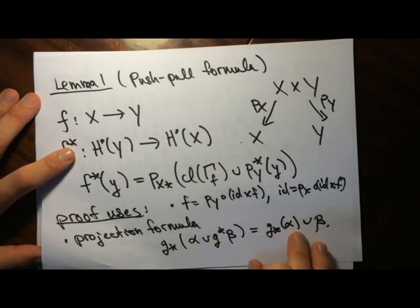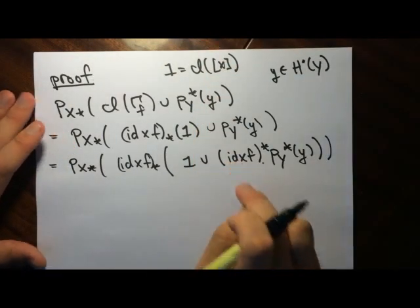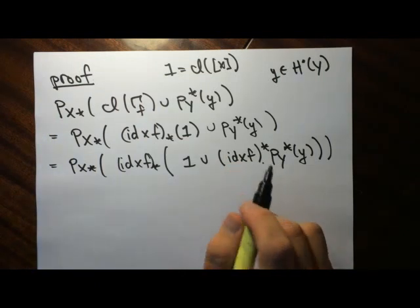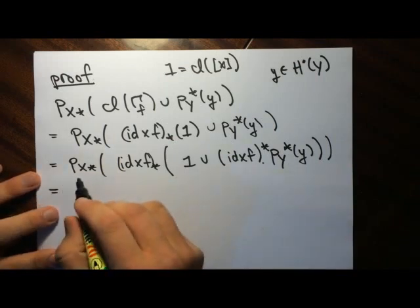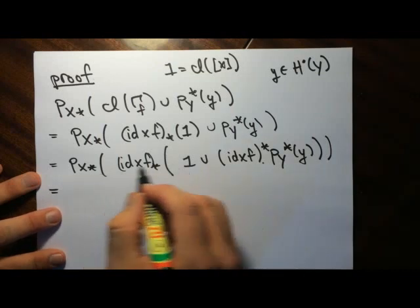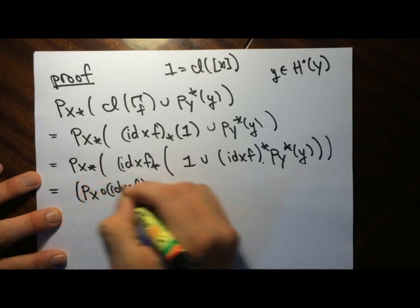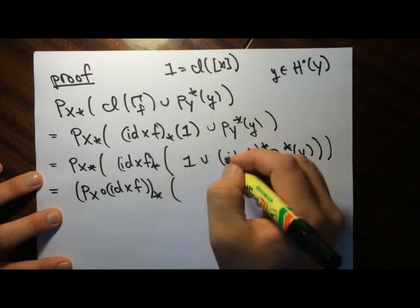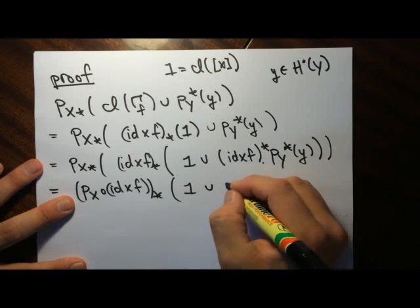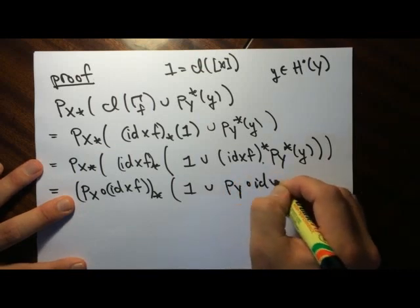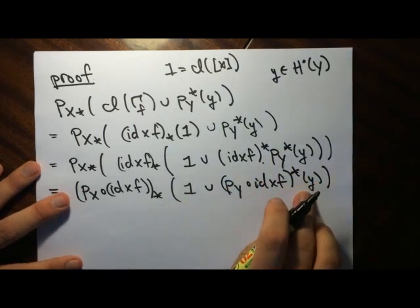We read it backwards — that's what we used here where G, in this particular case, is identity cross F. So we have this, and now this is going to be equal to: we have two pushforwards, and the pushforward of a composition is the composition of the pushforwards. So this is p_X composed with identity cross F, pushforward.